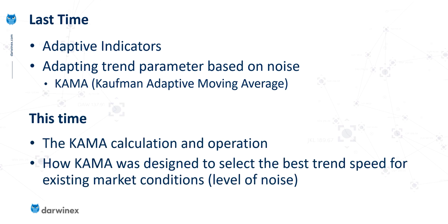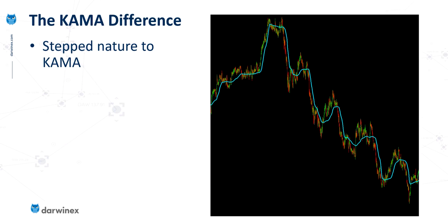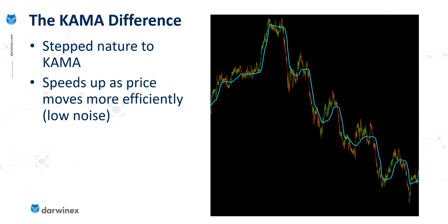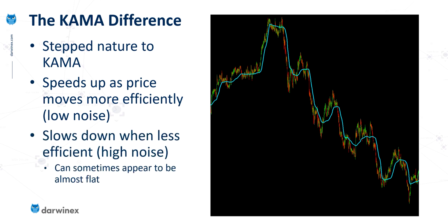This time, I look in a lot more detail at the calculation that sits behind this indicator and the reasons why it operates as it does. The KAMA was specifically designed to select the best trend speed for the existing market conditions in terms of the amount of noise. Even when we just look at this indicator visually on a chart, we can see that occurring. Rather than being smooth like a standard moving average, we see this stepped nature in the movement. The moving average speed is intentionally increased when the market is moving efficiently in a particular direction, and then slowed right down when there isn't any efficiency — in other words, when the market is noisy.